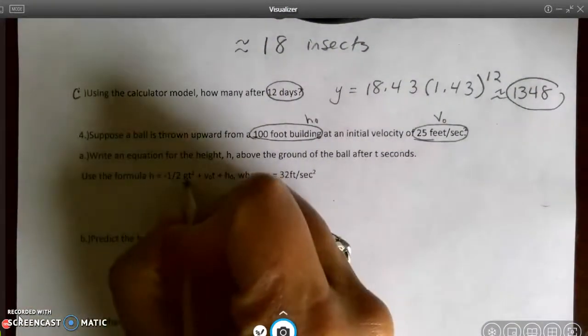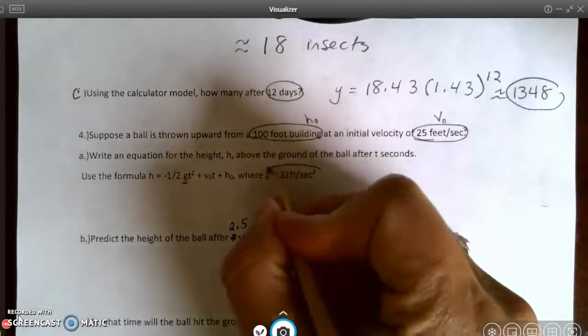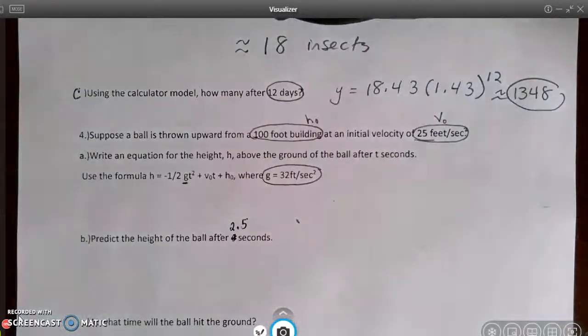And my g, because it's in feet, is going to be 32 feet per second squared. So I've got everything that I need.